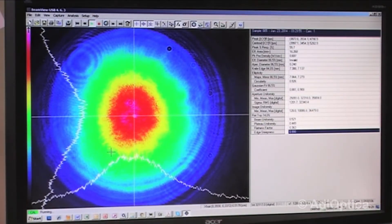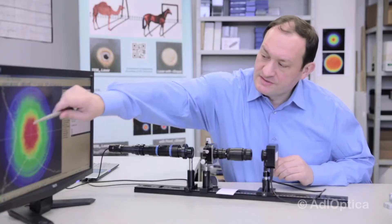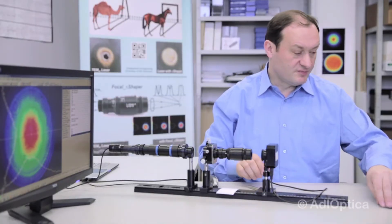So this is a typical pattern after the focal pie shaper. And it is considered okay because we have rings centered with respect to the central spot.